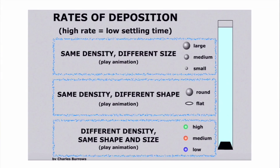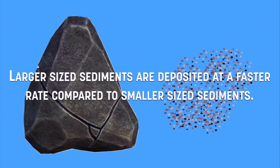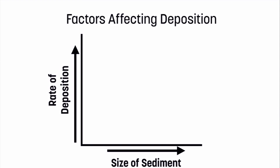Let's look at how this actually works. I have three different particles — a large, a medium, and a small — and I'm going to drop them into water simultaneously. The large sediment would settle faster than the smaller sediment, proving what the chart in our reference tables demonstrates: larger-sized sediments are deposited at a faster rate compared to smaller-sized sediments. On a graph, as the size of sediments increases, the rate of deposition also increases — so this is a direct relationship.